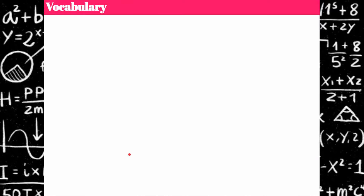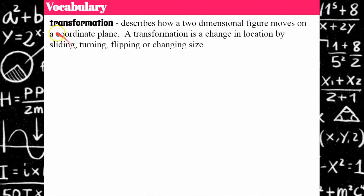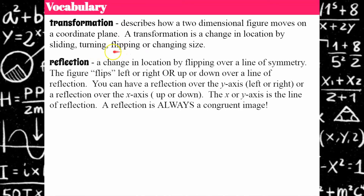Let's review some vocabulary before I start. A transformation describes how a two-dimensional figure moves on a coordinate plane. A transformation is a change in location that occurs by sliding, turning, flipping, or changing size. Today we're talking about flipping. Flipping mathematically is called a reflection, which is a change in location by flipping over a line of symmetry or a line of reflection.